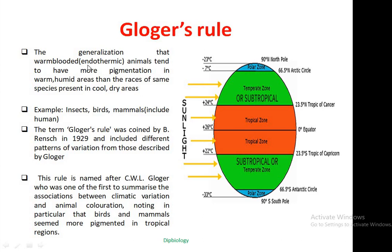Warm-blooded or endothermic animals are those which have the capability to regulate their body temperature up to a certain extent. If their environment varies, they cannot immediately change their body temperature. They can resist their body temperature up to certain limits — they have the power to regulate it, but cannot change it immediately according to the environment.